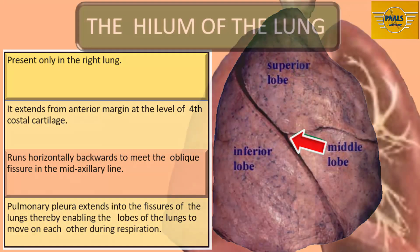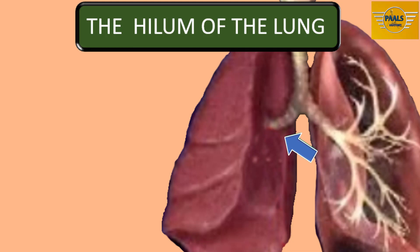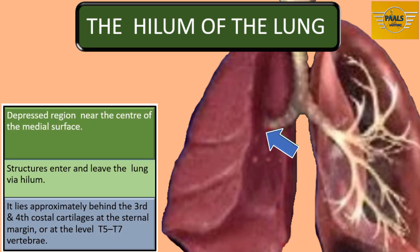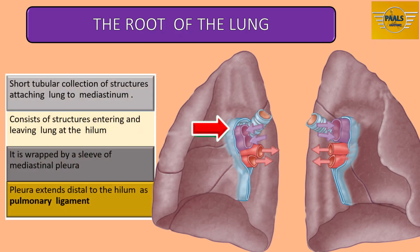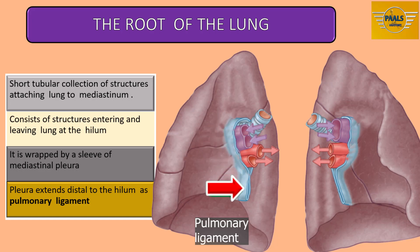The hilum is a large depressed region of the lung lying near the center of the medial surface. Various structures enter and leave the lung via the hilum. The hilum of each lung lies approximately behind the third and fourth costal cartilages, or at the level of T5 to T7 vertebrae. The root of each lung is a short tubular collection of structures that together attach the lung to structures in the mediastinum. It is wrapped by a sleeve of mediastinal pleura that reflects onto the surface of the lung as visceral pleura, extending distal to the hilum as a narrow fold called the pulmonary ligament.